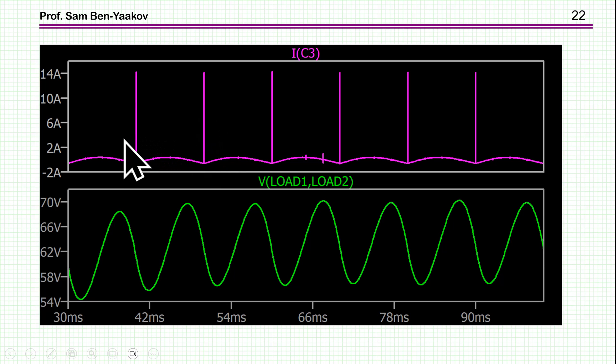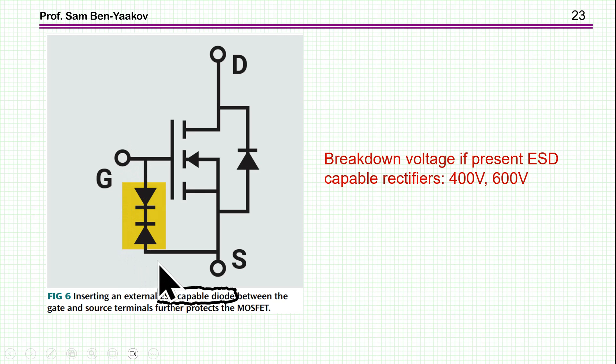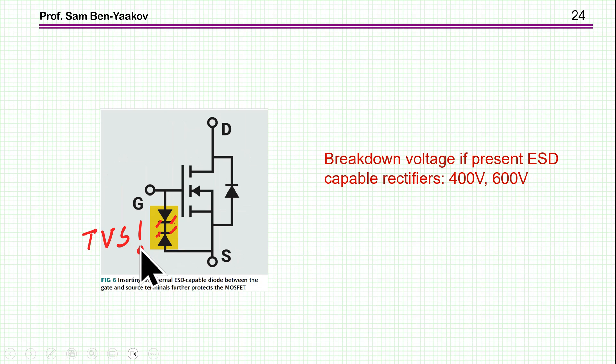So now I'm coming back to this suggestion of putting these at the gate. Well, this is not a very good idea because the available ESD capable rectifiers today have a breakdown of 400 or 600 volts. Well, obviously, you cannot put a 600 or 400 volts at the gate of a MOSFET to protect it. Doesn't make sense, of course. So I would imagine that the intention here is to just put a regular TVS for protection.